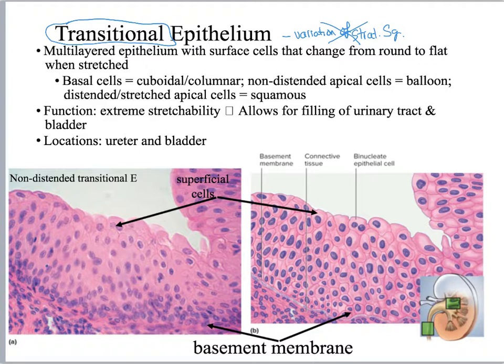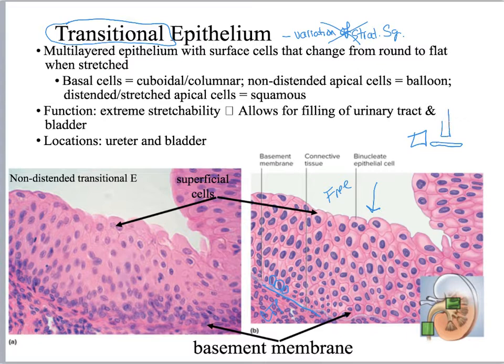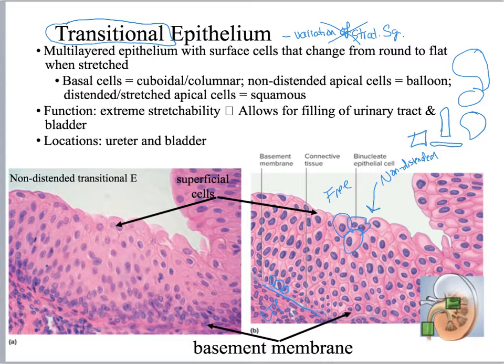Looking at the image on the right — I have my free edge up here and my basal edge down here with the basement membrane. What I see are roughly cuboidal or round-shaped cells on the basal edge. But at the apical edge, the cells are really weird — they're not cube-shaped, not squamous, not columnar. They are bubbles. I can see a bubble here, a bubble here, a bubble there. This is non-distended, meaning it's not stretched out. When you see this bubble-shaped apical cell type that's not stretched out, you know you're dealing with transitional epithelium.